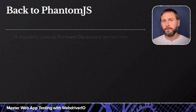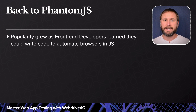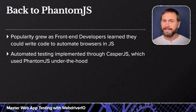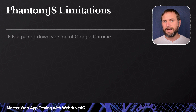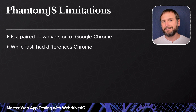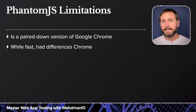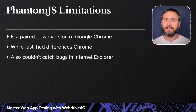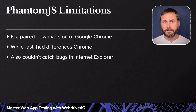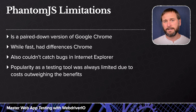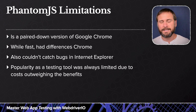PhantomJS's popularity grew as developers realized they could write code to automate browsers. Automated testing immediately came to mind, and a sister tool called CasperJS was created to complement PhantomJS. There was only one problem: PhantomJS was a pared-down version of Google Chrome. It was fast and had many features of a normal browser, but it wasn't the browser site visitors would actually be using. You could write all the test automation you wanted, but it still wouldn't catch bugs that only occur in Internet Explorer — and at that time, many websites still needed to support those buggy versions. So PhantomJS's popularity as a testing tool was always limited.